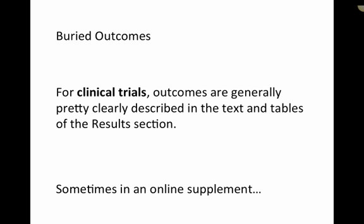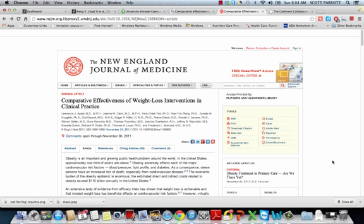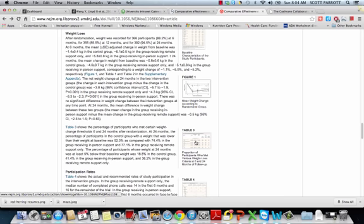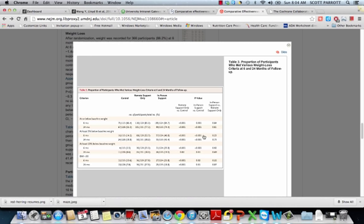Sometimes you may not see exactly what you're looking for in the article, but you can find it in an online supplement. Here we have an article from the New England Journal of Medicine that is looking at the effectiveness of weight loss interventions, which is what we're interested in. But we're interested in the changes in BMI. So we scroll down here, go through like we would normally, and table three looks like it probably gives us what we need.